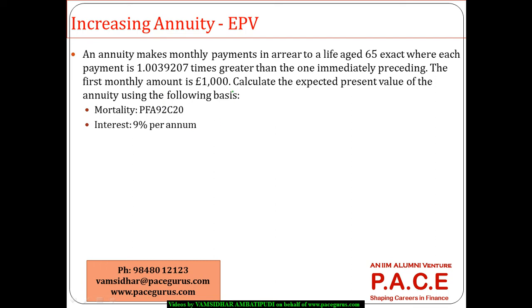Let's look at this numerical problem about the expected present value of an increasing annuity. An annuity is making monthly payments in arrear to a life aged 65 exact. Each payment is 1.0039207 times greater than the one preceding. The first monthly amount is 1000, so the first payment is 1000.